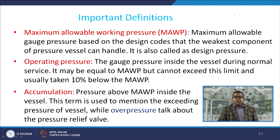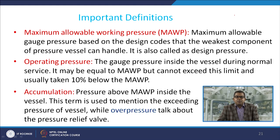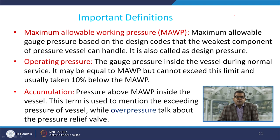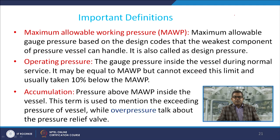The second definition is Maximum Allowable Working Pressure (MAWP) — the maximum allowable gauge pressure based on design codes that the weakest component of a pressure vessel can handle; also called design pressure. Operating pressure is the gauge pressure inside the vessel during normal service — it may equal MAWP but cannot exceed it, and is usually taken 10% below MAWP. Accumulation is the pressure above MAWP inside the vessel; this term refers to the exceeding pressure of the vessel, while overpressure refers to the pressure relief valve.